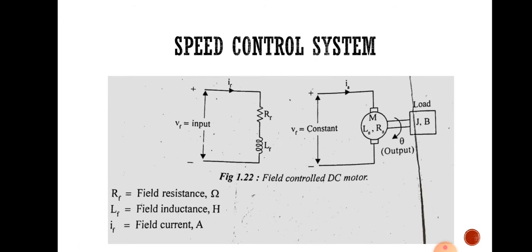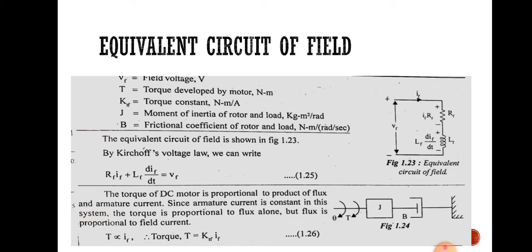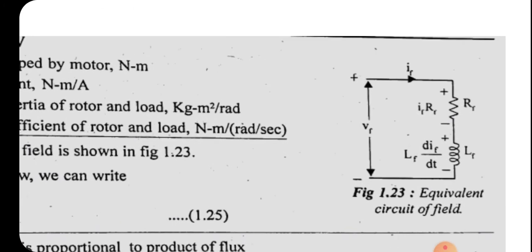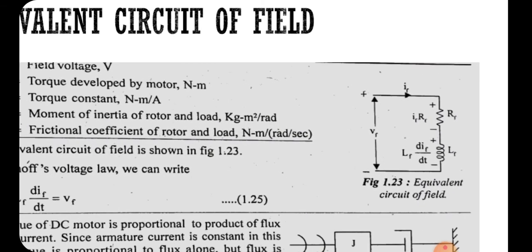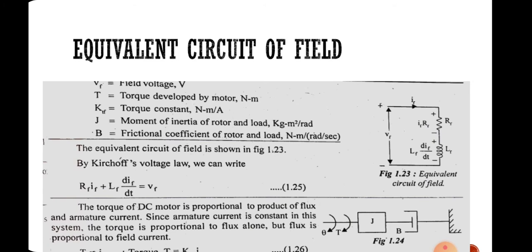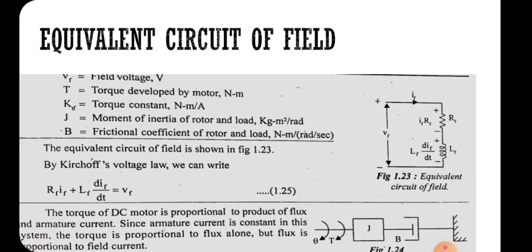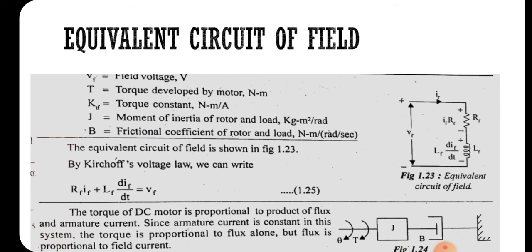The equivalent circuit of the field consists of field resistance Rf and field inductance Lf, with exciting voltage Vf and current If, as shown in Figure 1.3. Applying Kirchhoff's Voltage Law to this circuit, we get: If·Rf + Lf·(dIf/dt) = Vf, which is Equation 1.25.